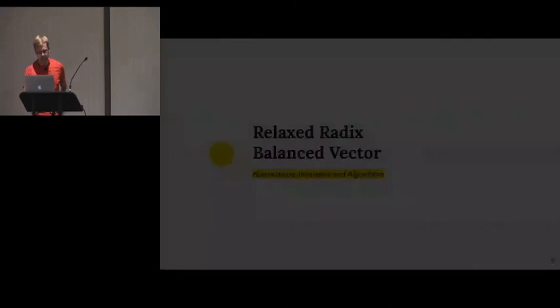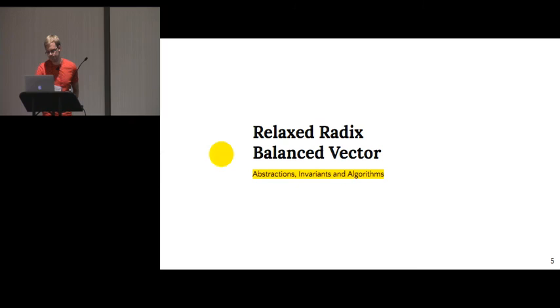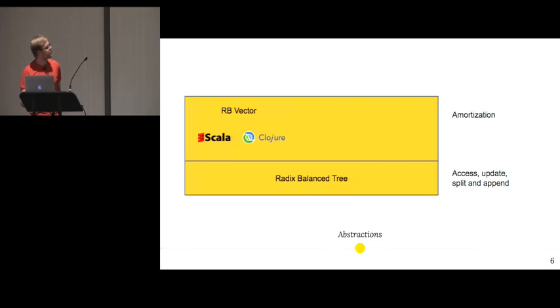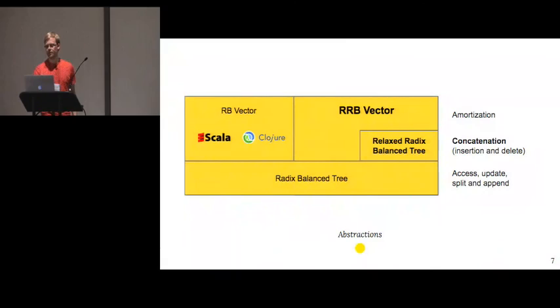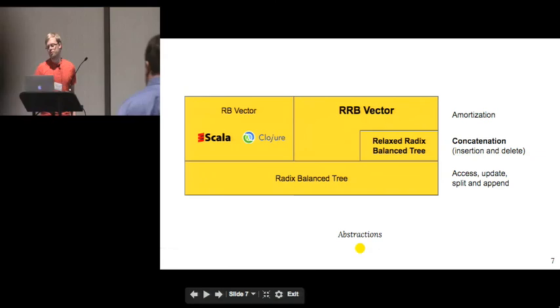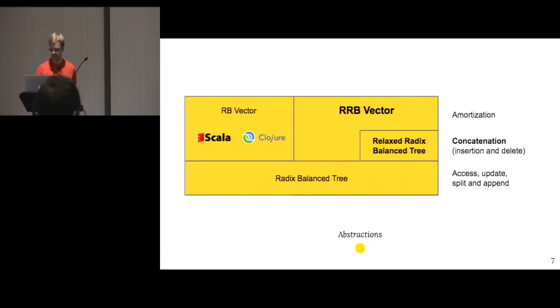So, RRB stands for Relaxed Radix Balance Vector. And I'll be explaining what that means. So, first, this is the current state of the vector. We have a radix balance tree, without the relaxed, which is the core to implement efficient access updates, splits, and appends. And then we have another layer of abstraction where we do some amortization on top of the logarithmic times. And RRB adds an additional layer here for what's called RRB tree, which adds the possibility of implementing an efficient concatenation. And with concatenation and splits, we can actually implement insertion deletions and so on. This was presented in a report in 2012. But in this paper, we actually focus more on how to take back the amortization optimization from the original vector and make it really practical for the users.